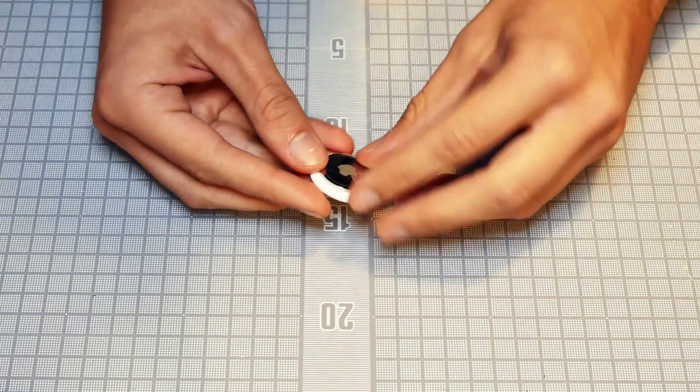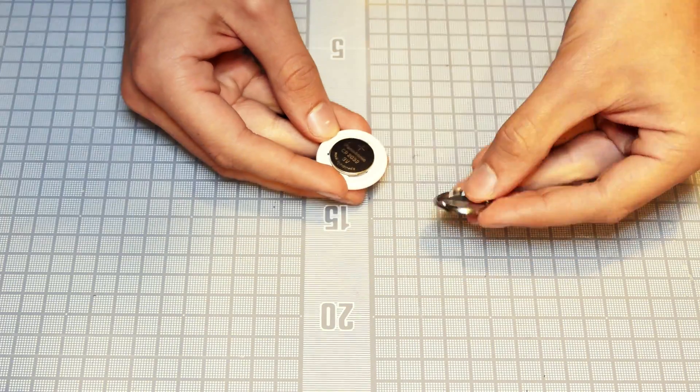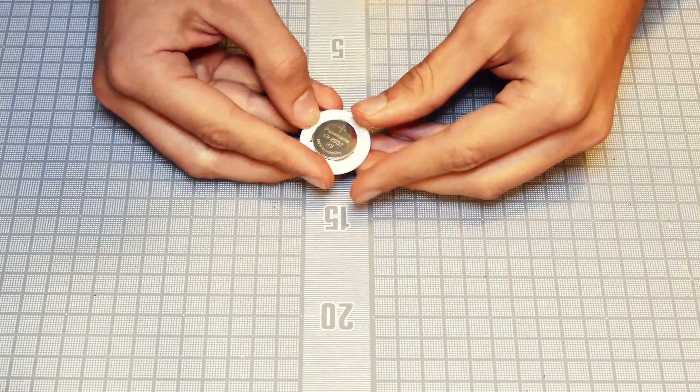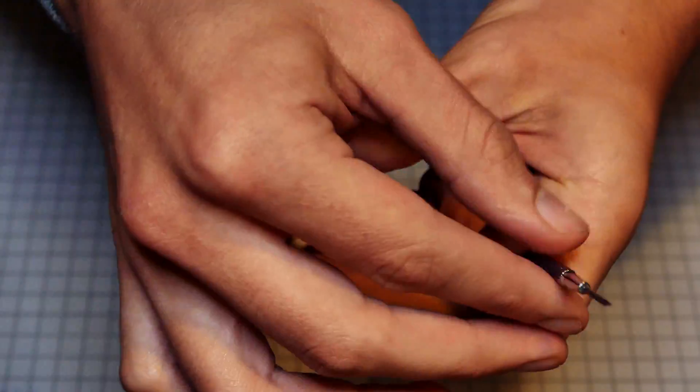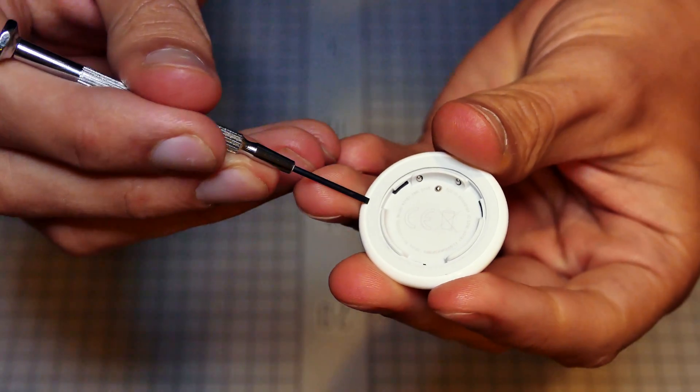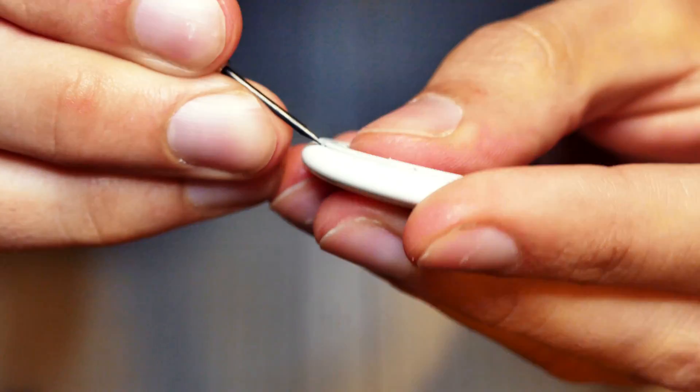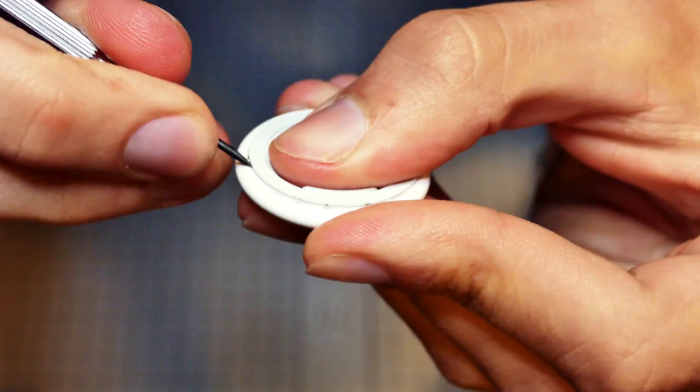Once you have all these tools, you'll first remove the battery cover for the AirTag, as well as the coin battery. Once you've done that, you'll grab your flathead and start prying this area to remove the cover to the main board of the AirTag. This part is fairly easy.